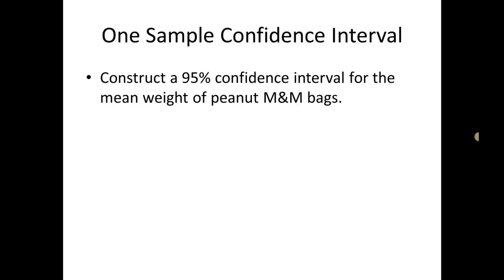The purpose of a confidence interval is to estimate the value of a parameter. In this case the parameter or the value about the population that we're interested in is mu, the population mean, or in other words the mean weight of all M&M bags everywhere. So we're going to construct a 95% confidence interval for the mean weight of peanut M&M bags.